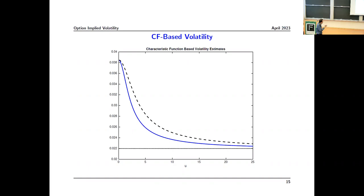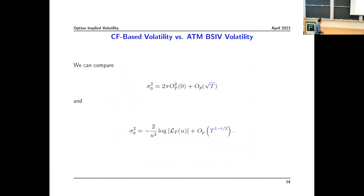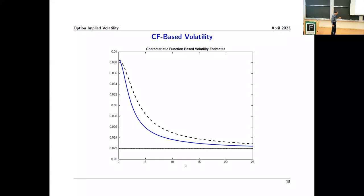In practice, there will be observation errors, so those smooth lines won't look as clean in data. Notice these curves all start at the same point. When u goes to zero, you get the total return variance — the second moment of the return, annualized. That corresponds to the VIX index, which contains jumps and all the other components. As you increase u, you separate the jumps and risk premiums and converge down to the true spot volatility.